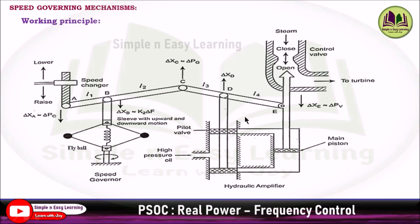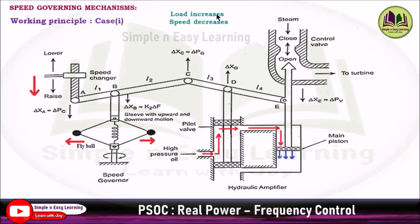Working principle Case 1: When load increases, turbine speed decreases, so the speed changer gives a raise command. The fly balls move outwards, point B moves downwards, and point D moves upwards. Since point D moved upward, the upper pilot valve moves outwards, making a path for high pressure oil to enter and press the main piston downward. This opens the control valve, increasing steam flow to the turbine, so turbine speed increases and frequency is maintained.